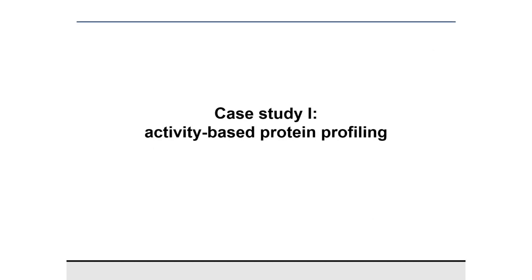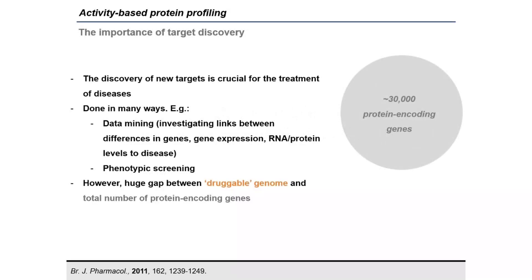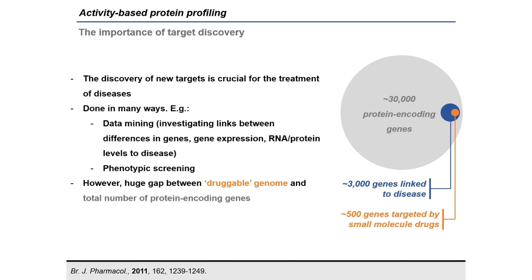The first case study is focused on the discovery of new targets, a crucial step in treating diseases. Target discovery can be achieved through data mining — investigating links between gene expression, RNA or protein levels, and disease — or through phenotypic screening and target deconvolution. However, there is a huge gap: while there are around 30,000 protein-encoding genes, we have only identified about 3,000 genes linked to disease, and only 500 of these are currently targeted by small molecules. This represents enormous potential for treating new diseases by identifying new proteins.